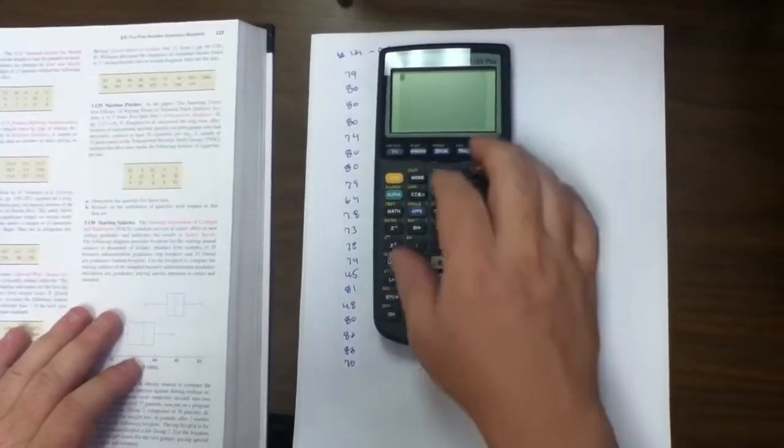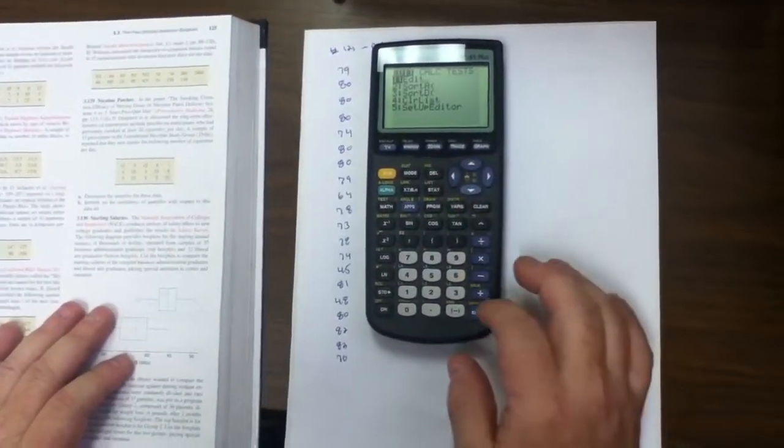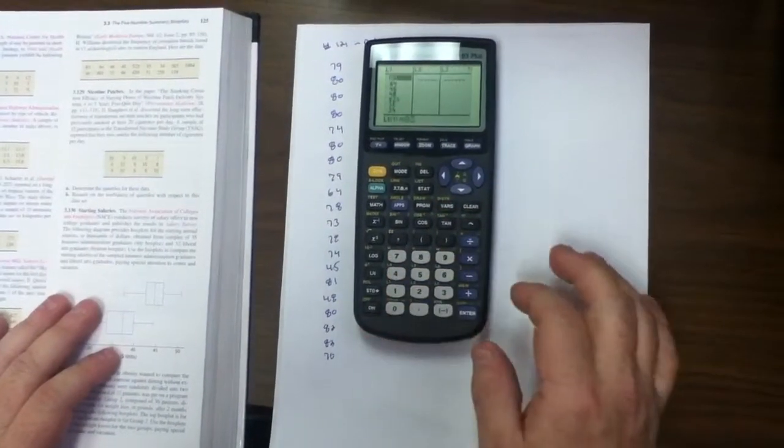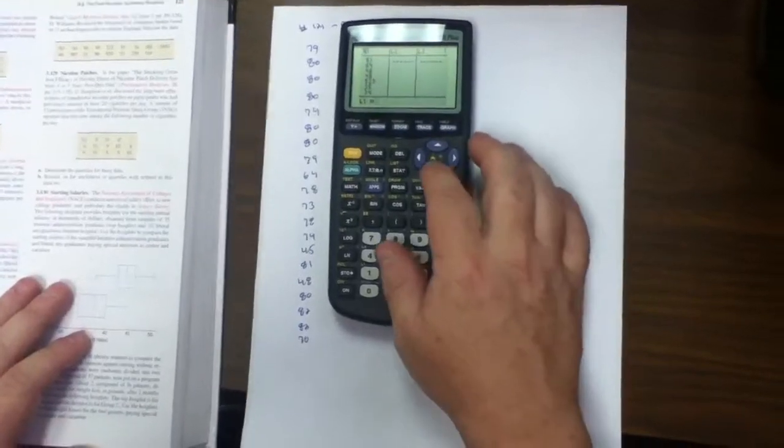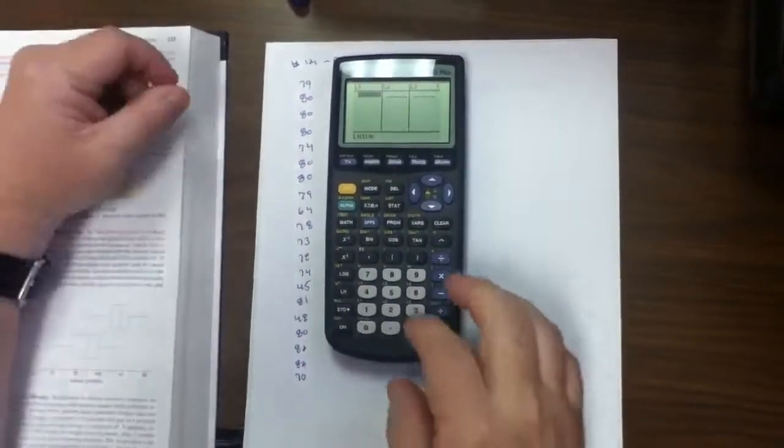Make sure this is back on. Hit the clear button. Hit the stat button. Go into the edit menu, one for edit. Clear out the old data set. Highlight L1. Hit clear. Hit the down arrow. It's gone. Enter the new data.